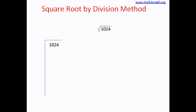We consider 1024 for division. The first step is to pair the numbers from the right hand side, and you place a bar over every pair. In this case, the first pair is 24 and the second pair is 10, because we start pairing from the right hand side.